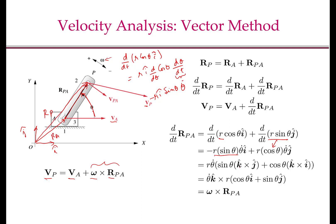Now, minus i-hat can be written as k-hat cross j-hat, where k-hat is the unit vector coming out of the plane. And j-hat can be written as k-hat cross i-hat. Rearranging, we get theta-dot times k-hat cross (R cos theta i-hat plus sin theta j-hat). This term in parentheses is the position vector RPA, and theta-dot times k-hat is the angular velocity vector omega. Therefore, d/dt of RPA equals omega cross RPA.